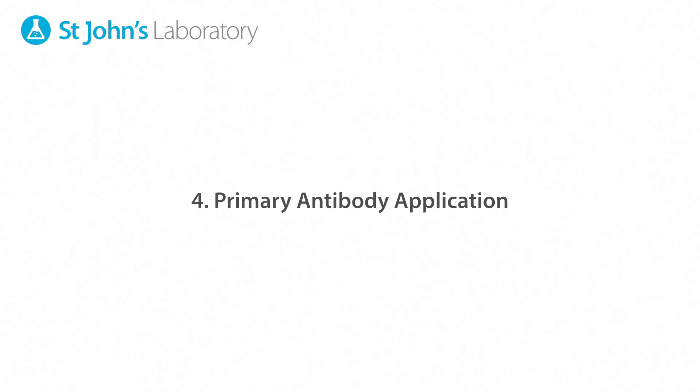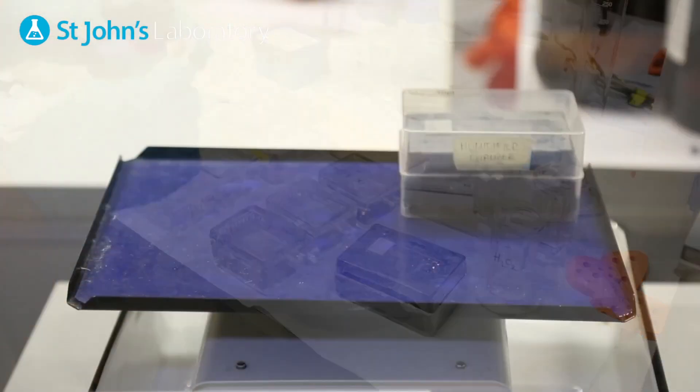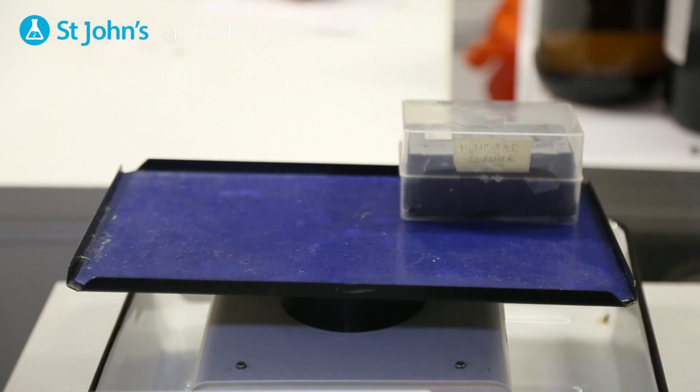Once the blocking process is complete, briefly wash the slide in PBS before applying the primary antibody, and leaving in a humidified chamber overnight.